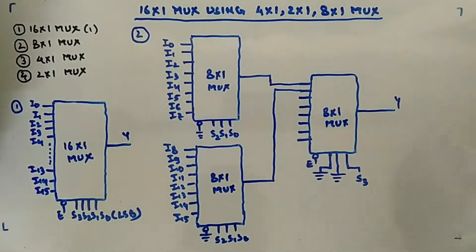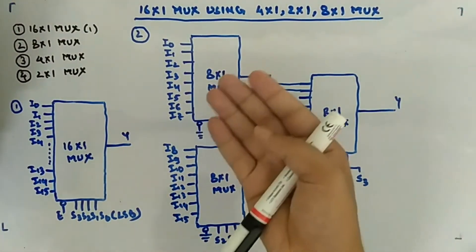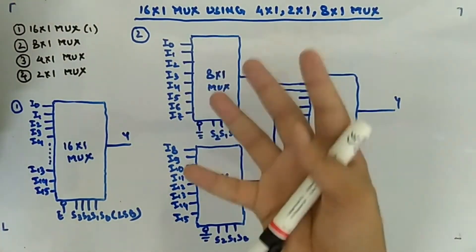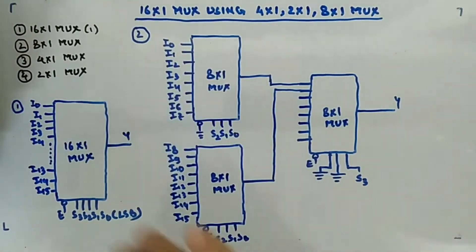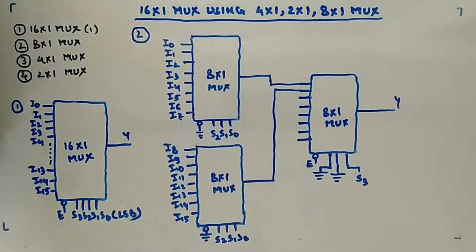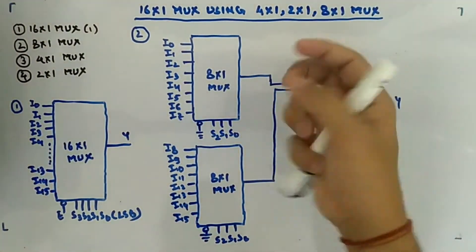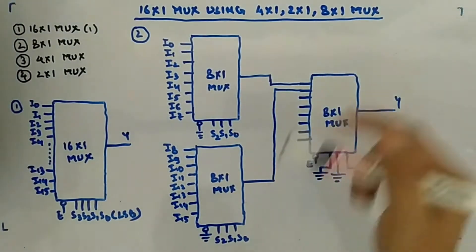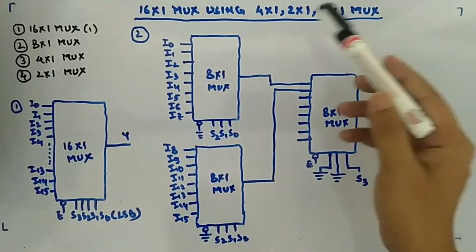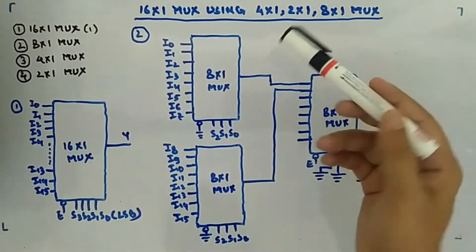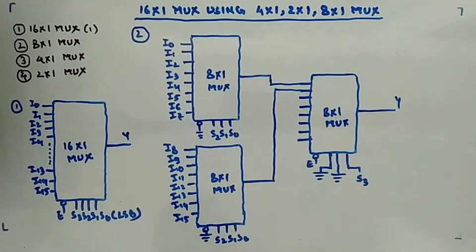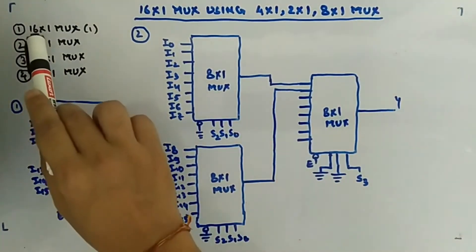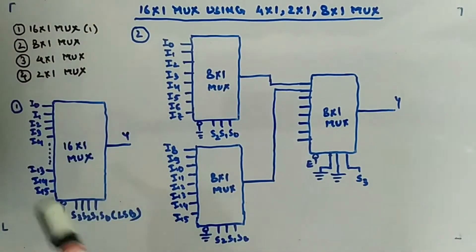Let's extend the idea of whatever we were doing till now - building a 16:1 MUX. We have in our bucket 4:1, 2:1, and 8:1 MUXes, and we will use each of them to see how we can construct a 16:1 MUX. So there are four ways to construct a 16:1 MUX.